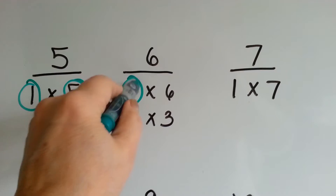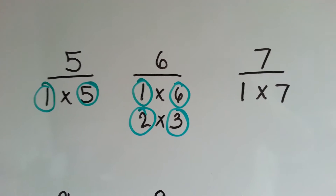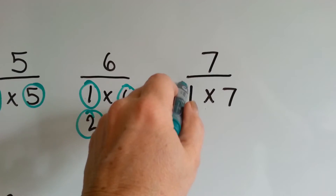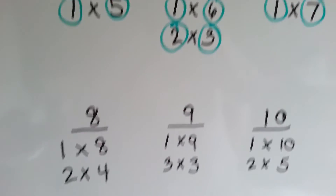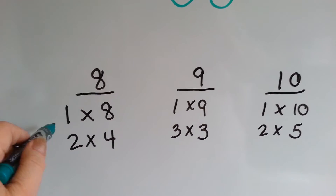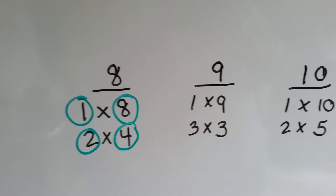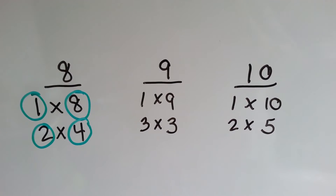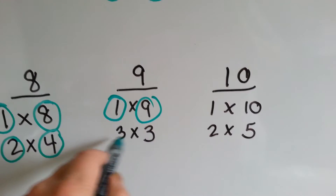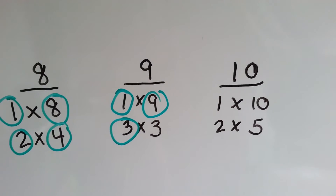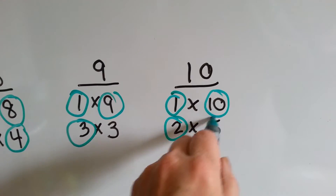For 6, a 1, a 6, a 2, and a 3 are factors of 6. 7 has a 1 and a 7 — those are factors of 7. The factors of 8 are 1, 8, 2, and 4. The factors of 9 are 1, 9, and 3. Factors of 10 are 1, 10, 2, and 5.